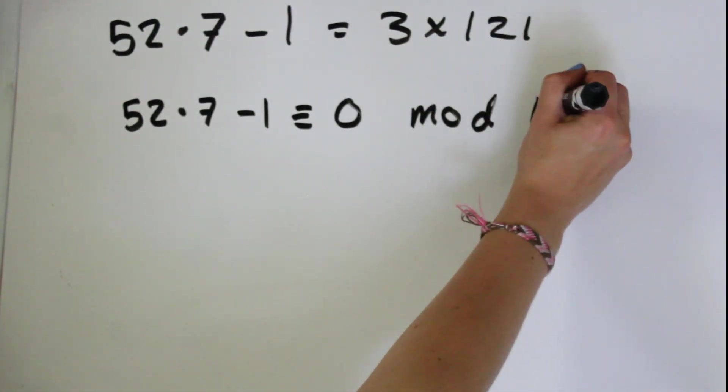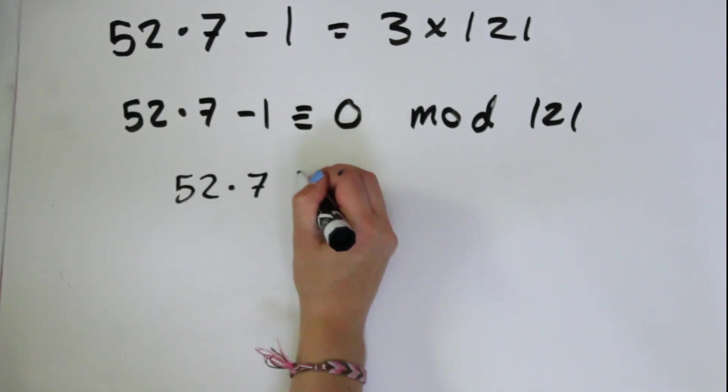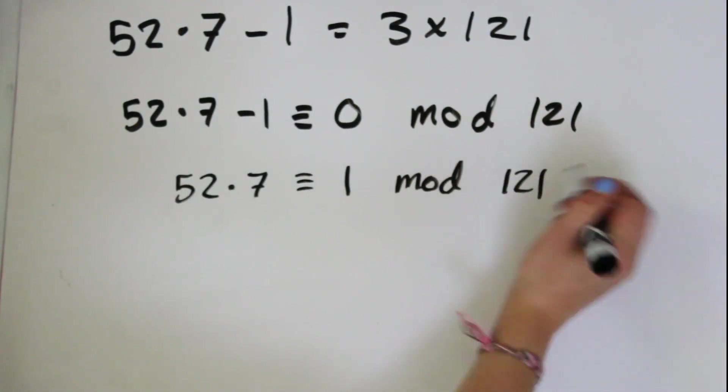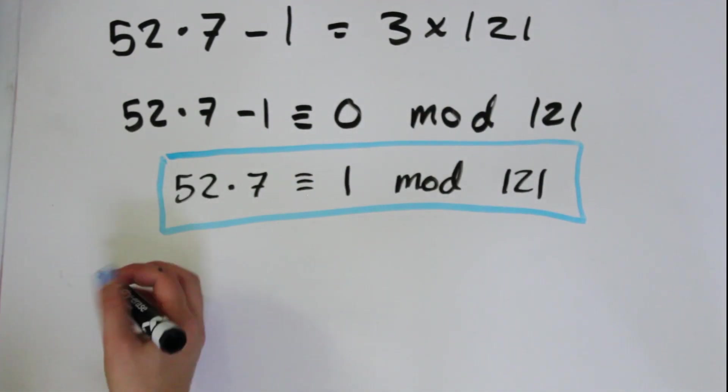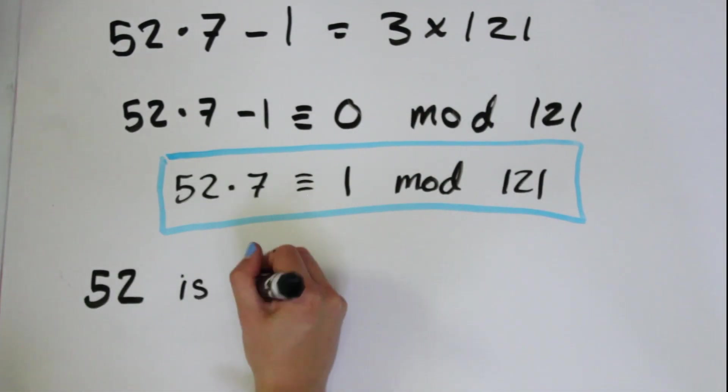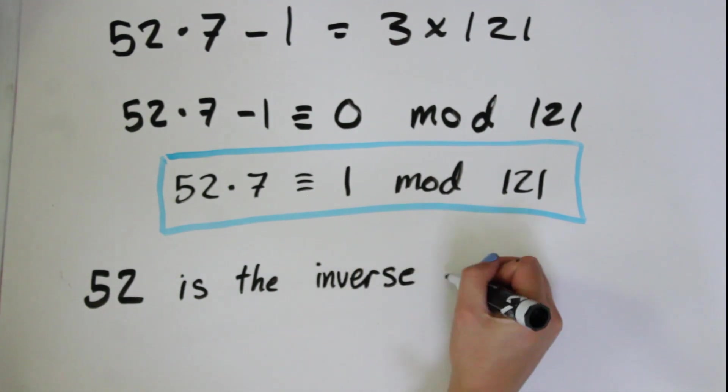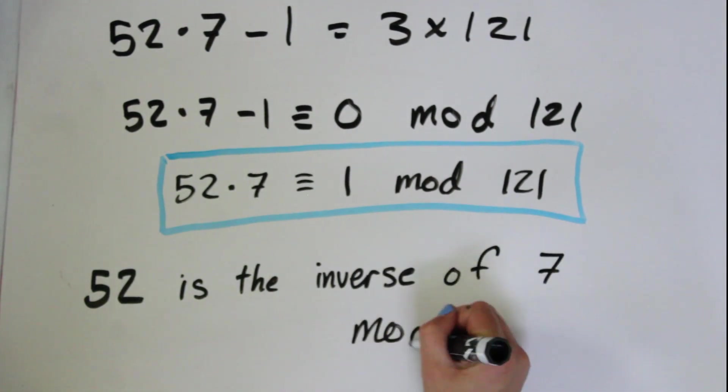Well, that means that 52 × 7 - 1 is congruent to 0 mod 121. So 52 × 7 is congruent to 1 mod 121. Therefore, 52 is the inverse of 7 mod 121.